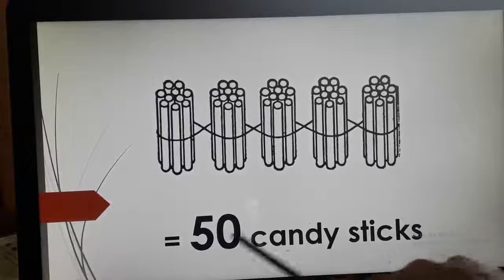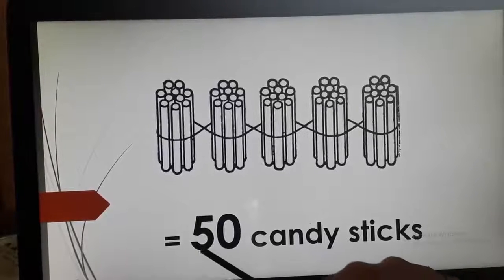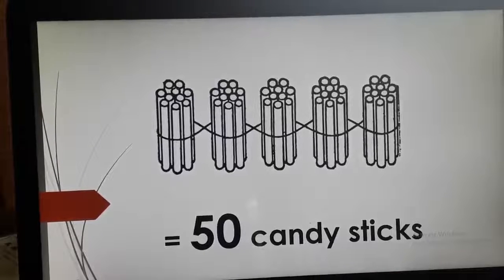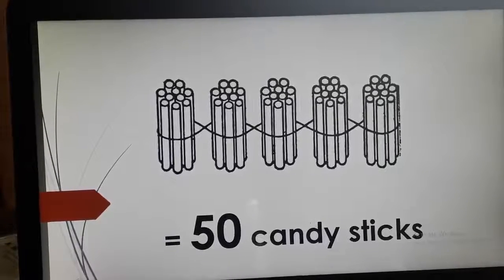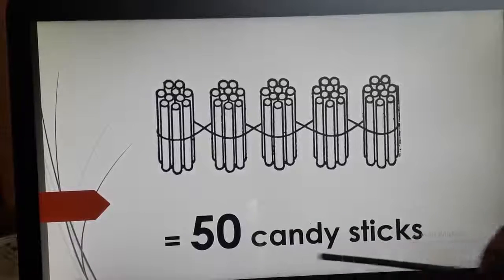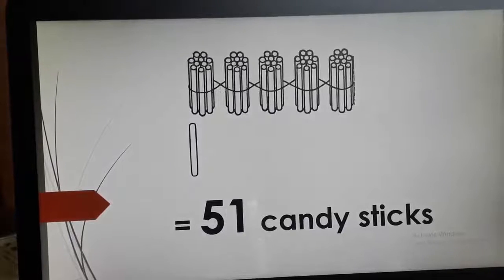So, here total 50 candy sticks are there. Total, how many candy sticks are there? 50. Children, repeat after me. Okay? And say with me. Try to count with me. So, here as you all know, 5 bundles is equal to 50 candy sticks. So, now let's move on to the next slide and count number 51.